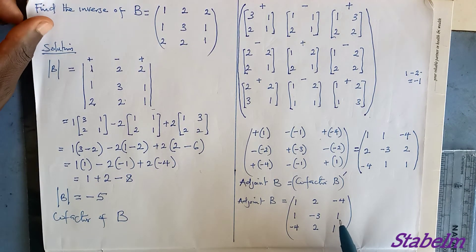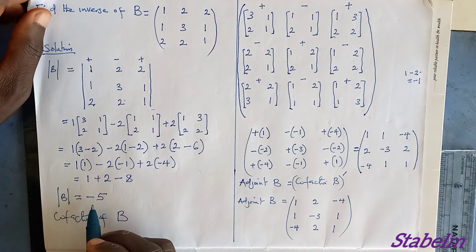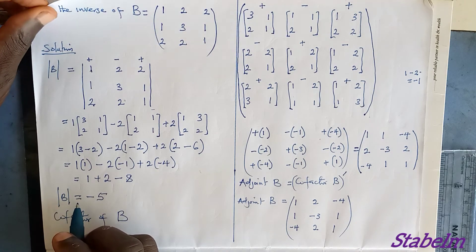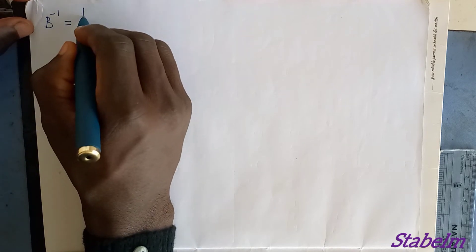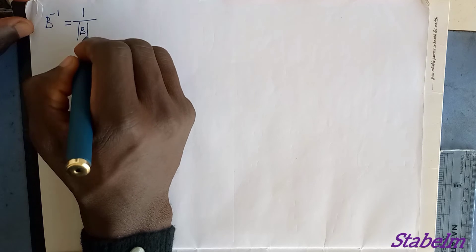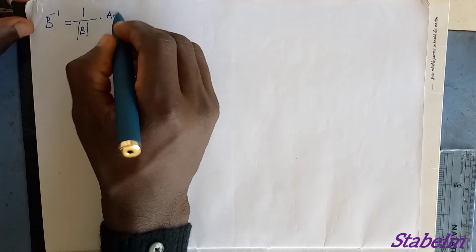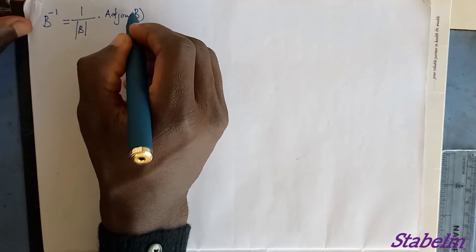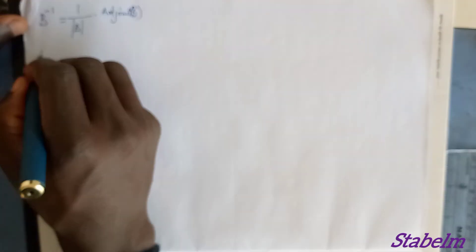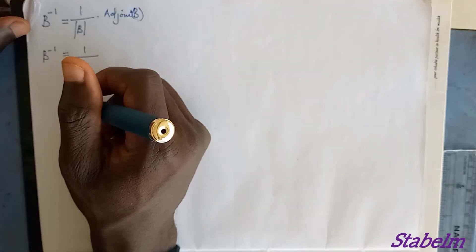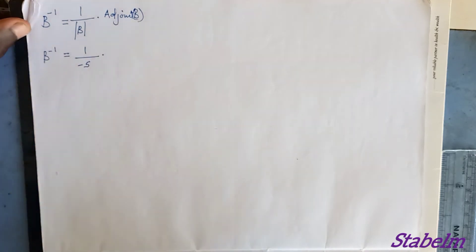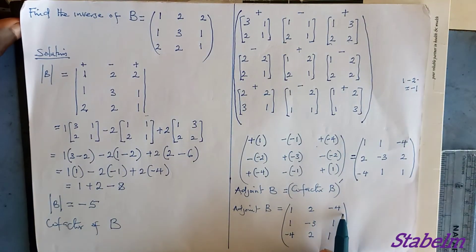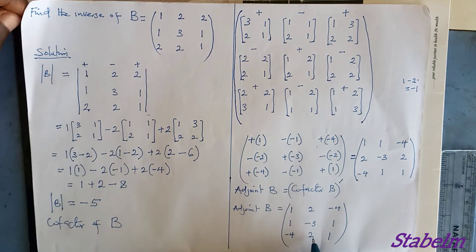Now applying the full formula: B inverse = 1 over determinant of B, multiplied by adjoint of B. The determinant is −5, so B inverse = (1/−5) × [1, 2, −4; 1, −3, 1; −4, 2, 1].